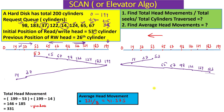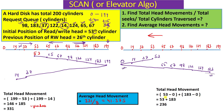Since there are no more pending requests after 183, the head stops there and does not continue to 199. Total head movements: (53 − 0) + (183 − 0) = 53 + 183 = 236 cylinders. The average head movement is 236 divided by 8 requests, which equals 29.5. Changing the direction changes both the total and average head movements.